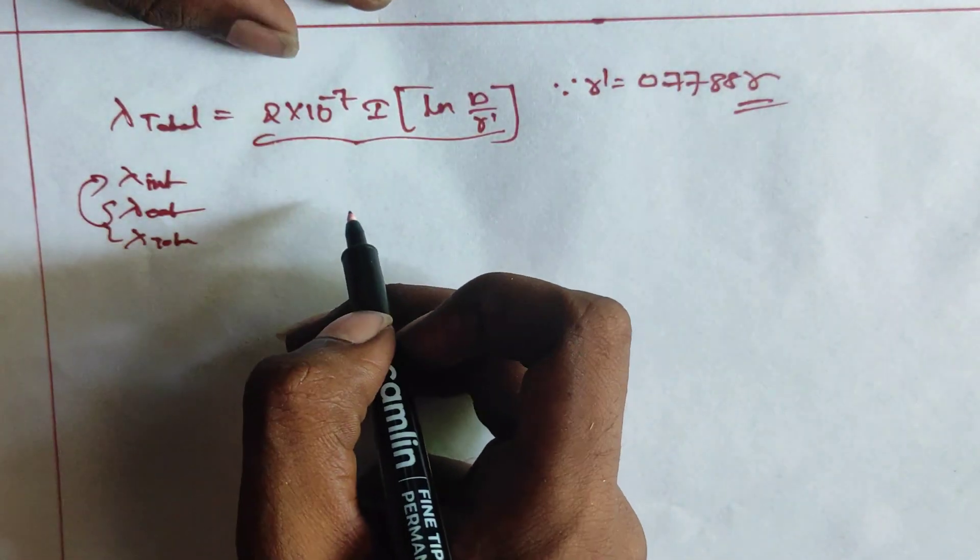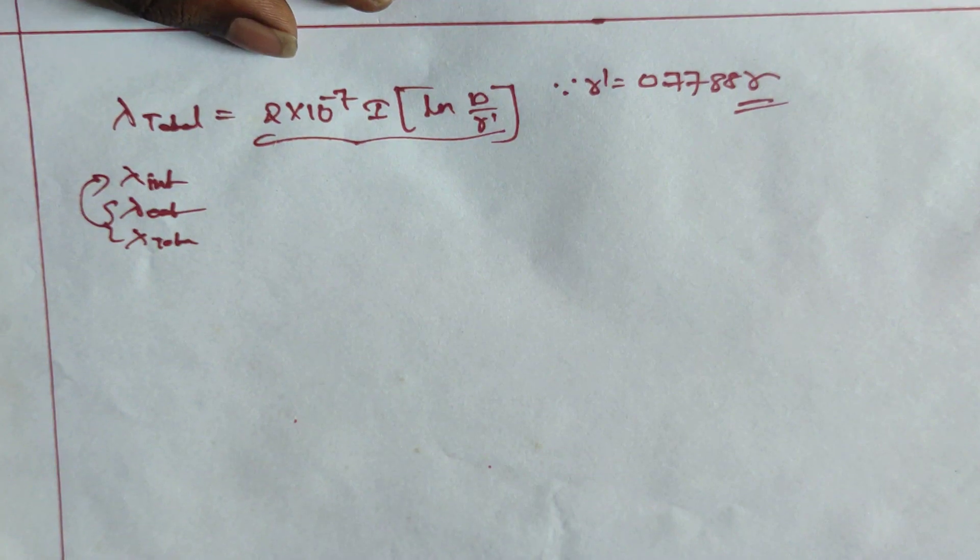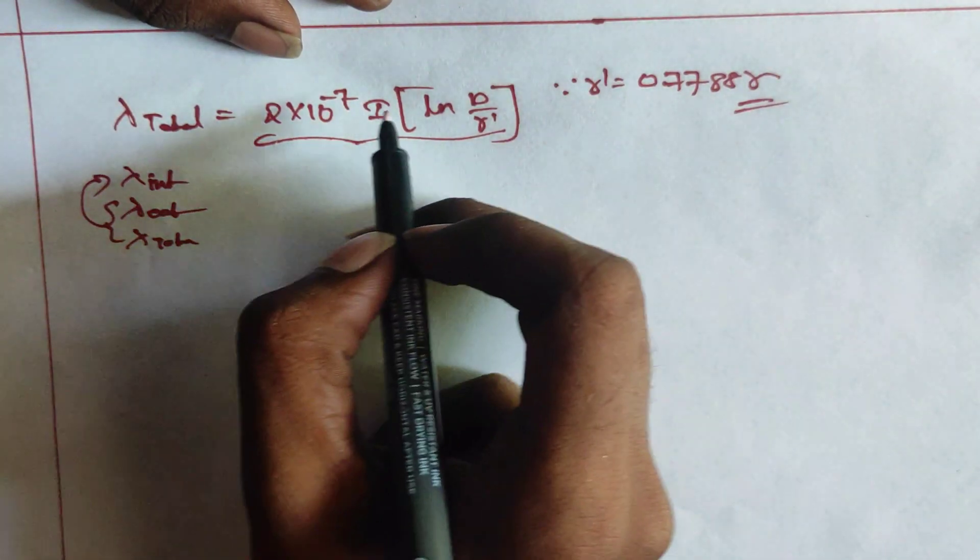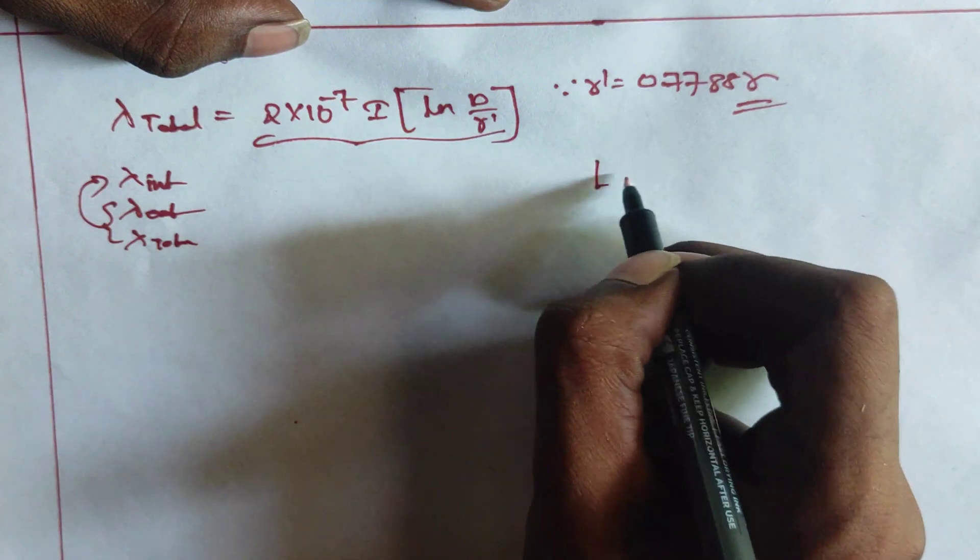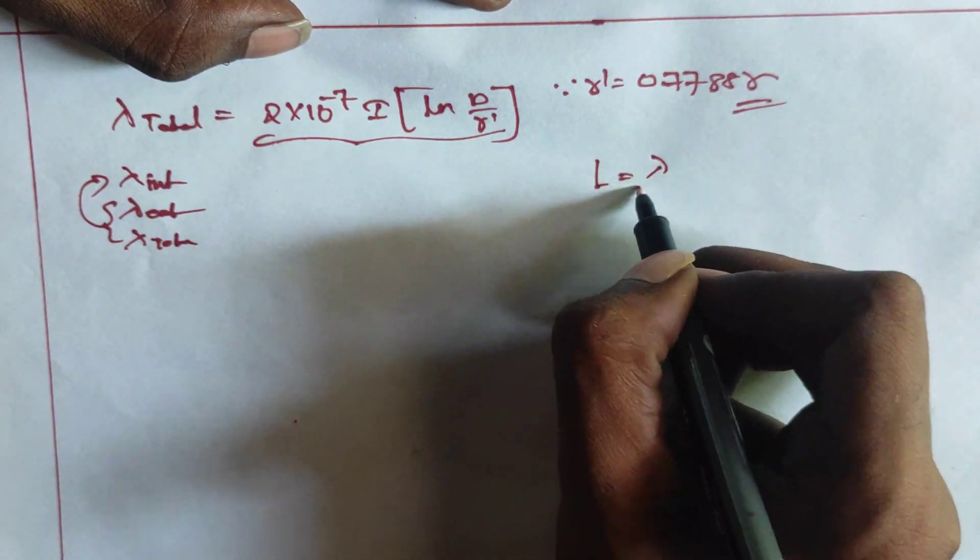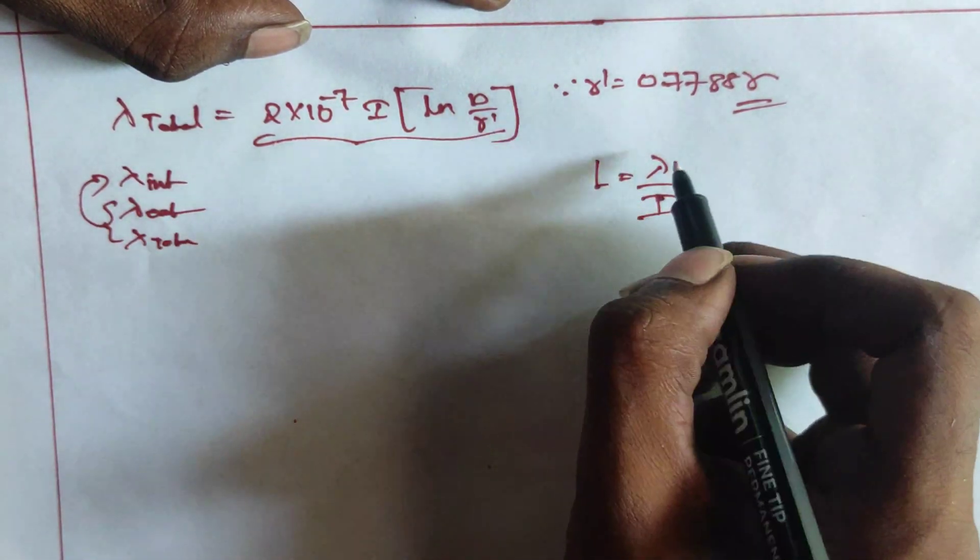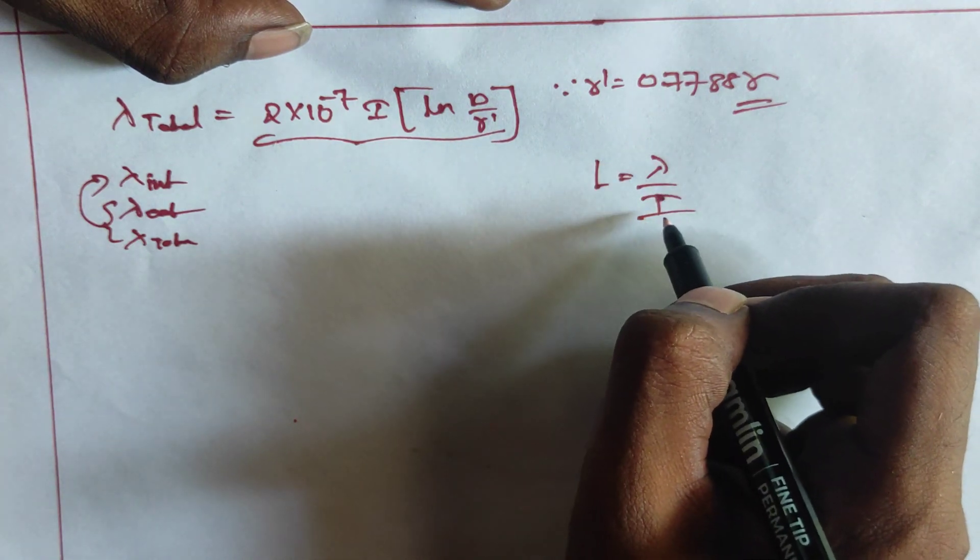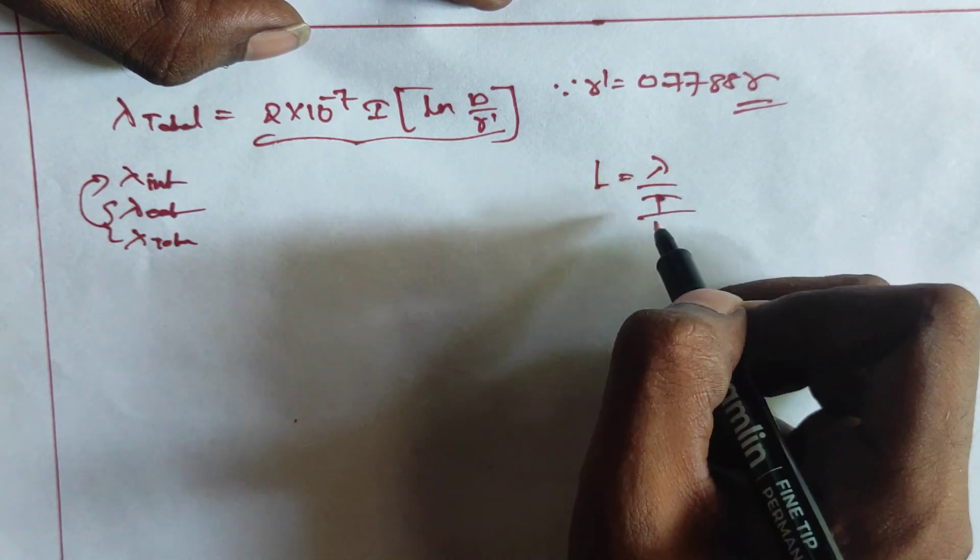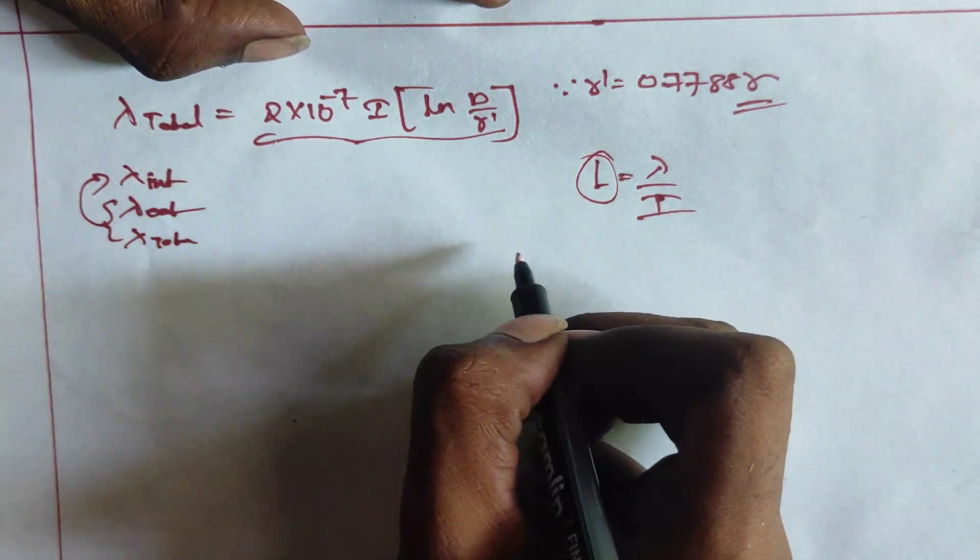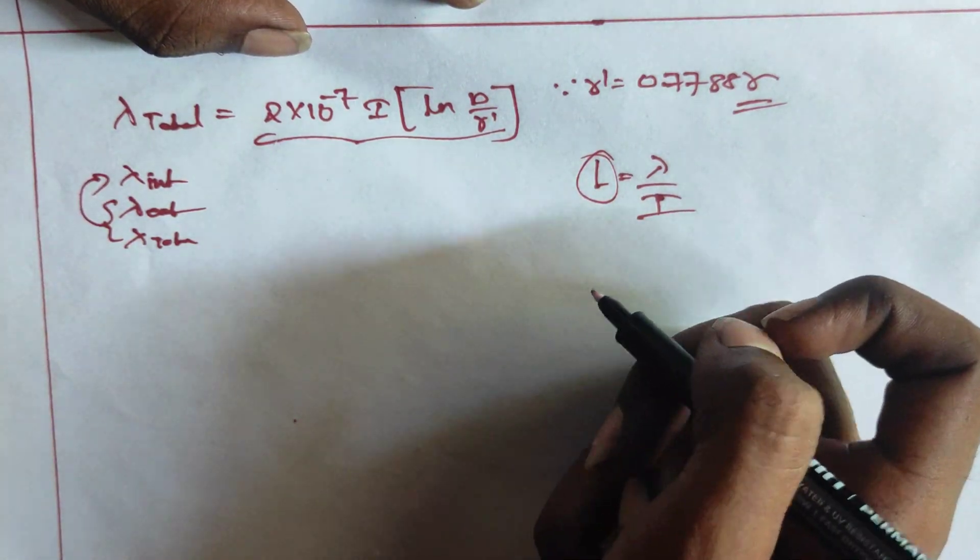What is inductance means? The inductance can be derived from L is equals to lambda by I. It means, flux linkage upon current. If flux linkage is divided by current I, then we will get the expression for the inductance. That's it. Very simple.